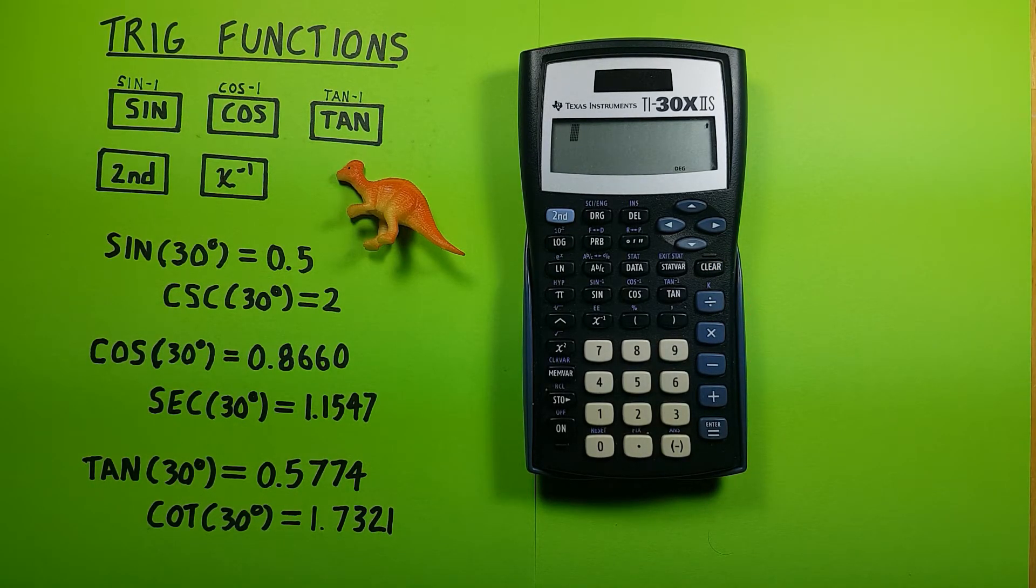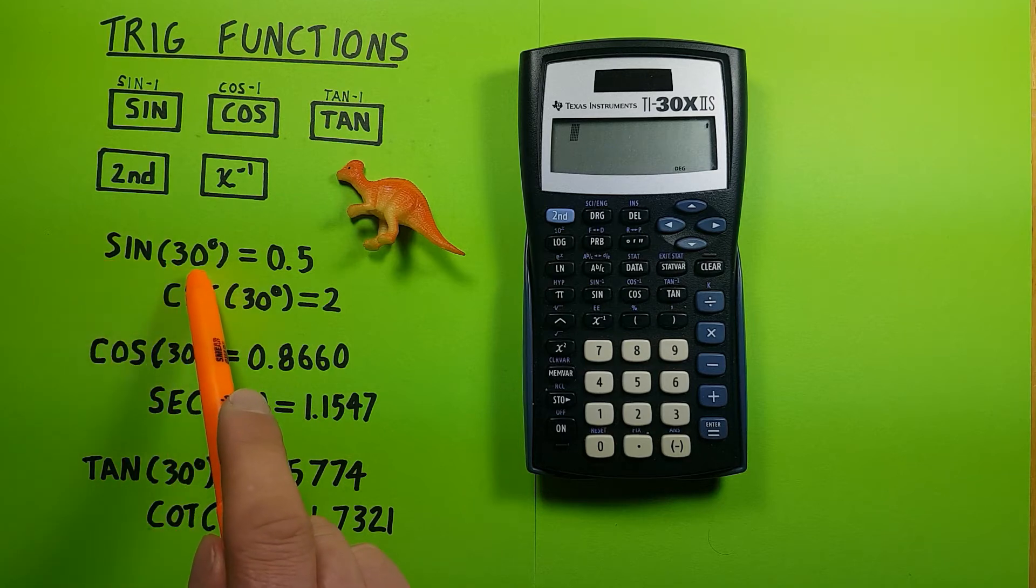Those are easy enough, but what if we wanted to find the cosecant, secant, or cotangent of a number? To do that, we inverse the result of the corresponding function. So for cosecant, we would inverse the sine of 30.